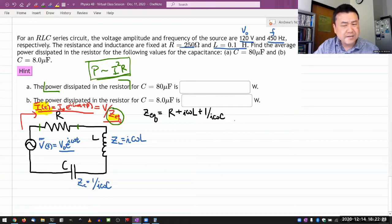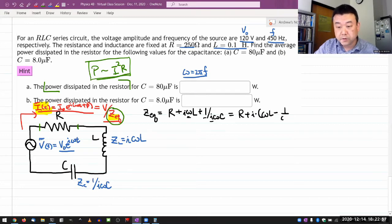At the very end, I'm going to do a substitution for omega using the expression that angular frequency is equal to 2π times frequency. This can be simplified a little bit. This 1 over i can be written as minus i. So this will be R plus i times ωL minus 1 over ωC. I'm going to leave it there.